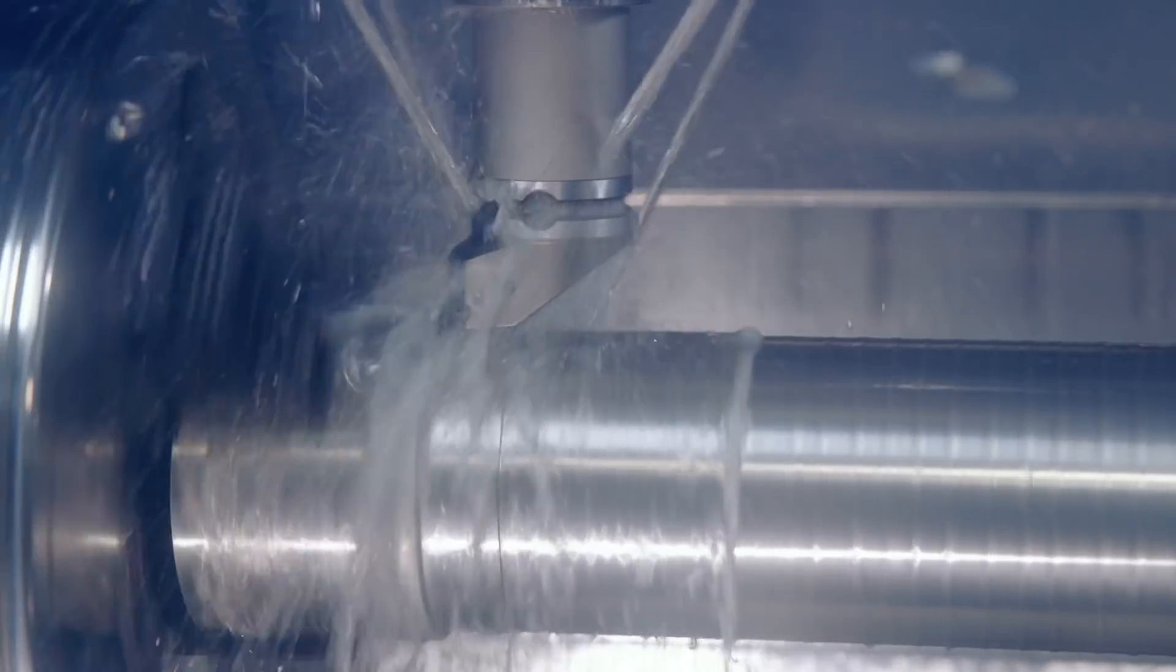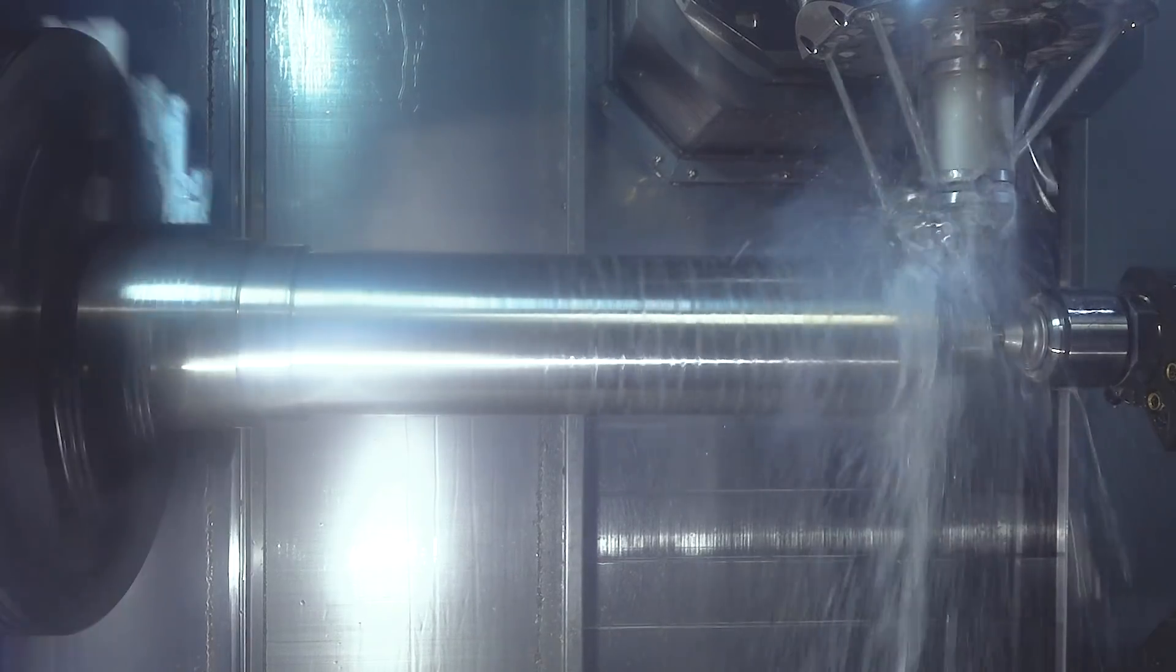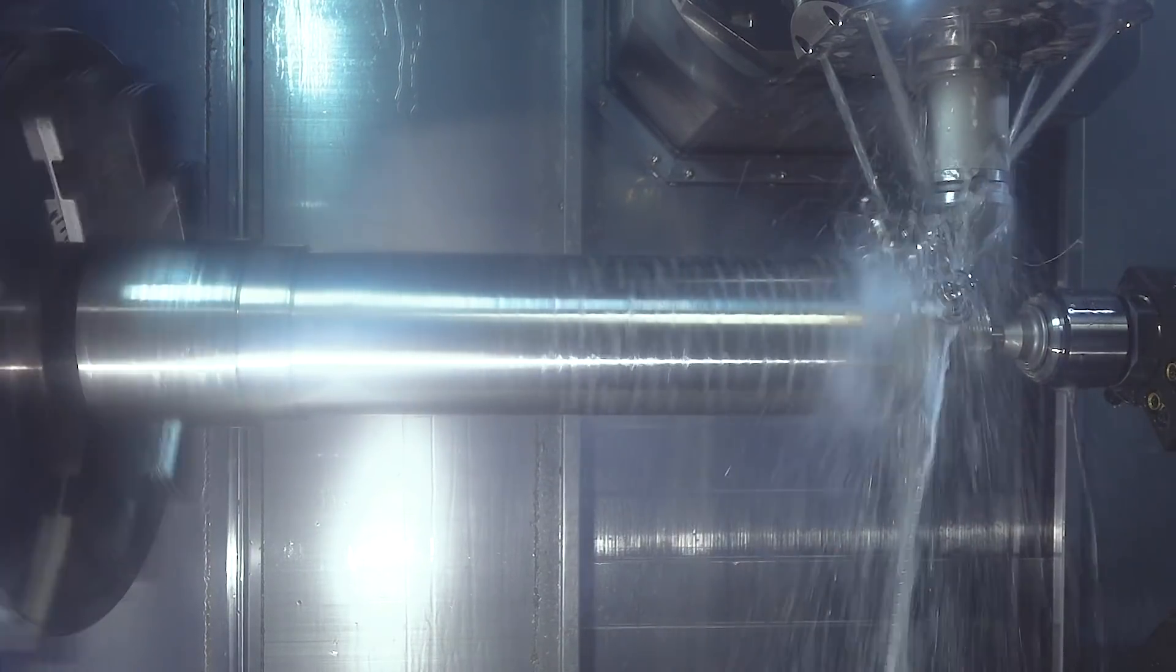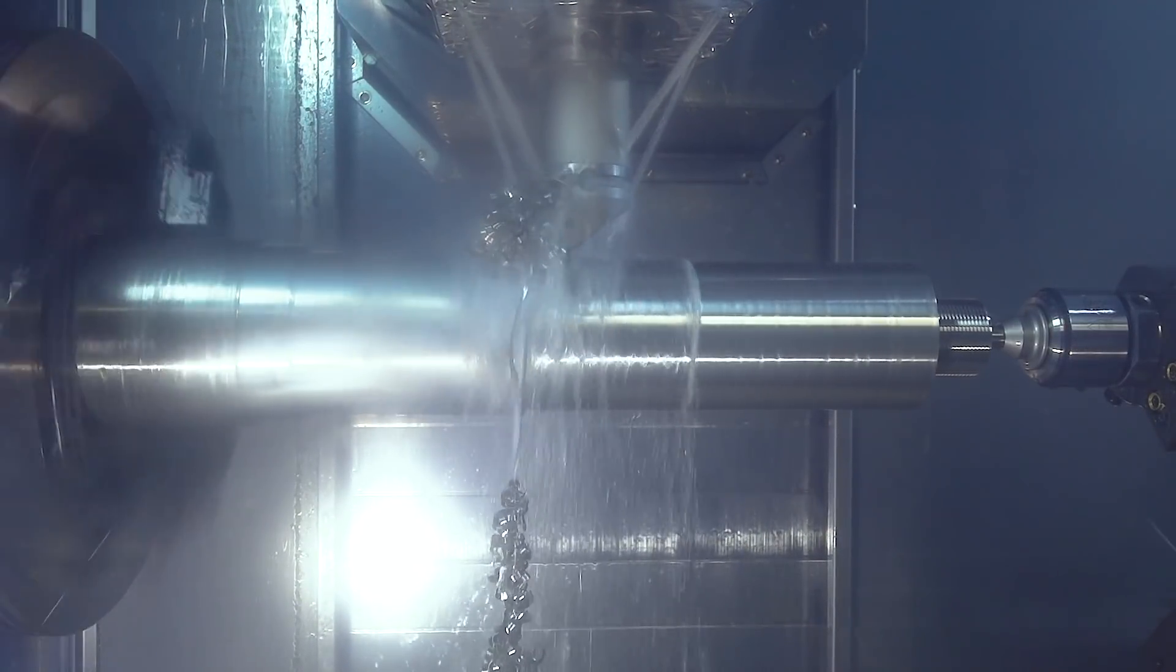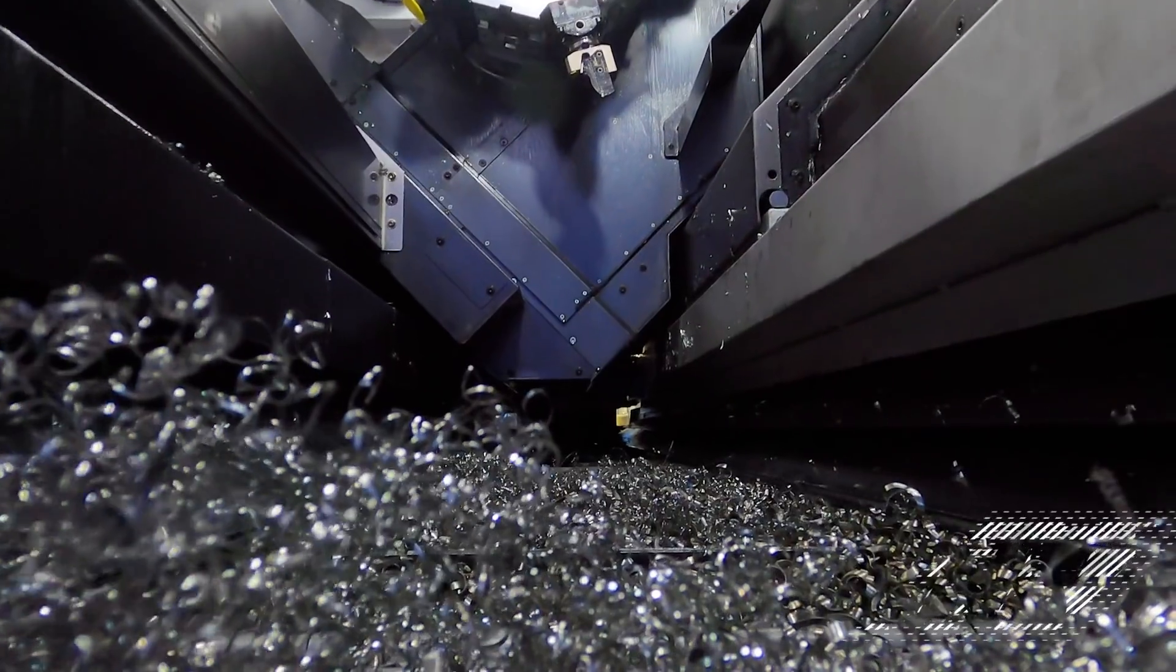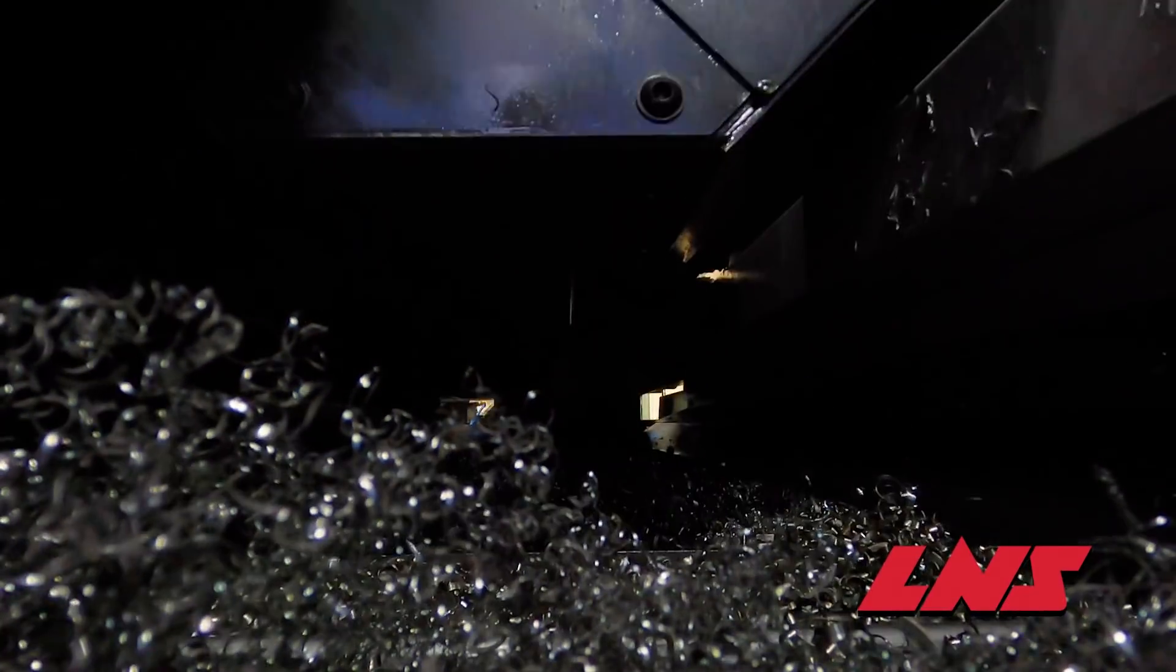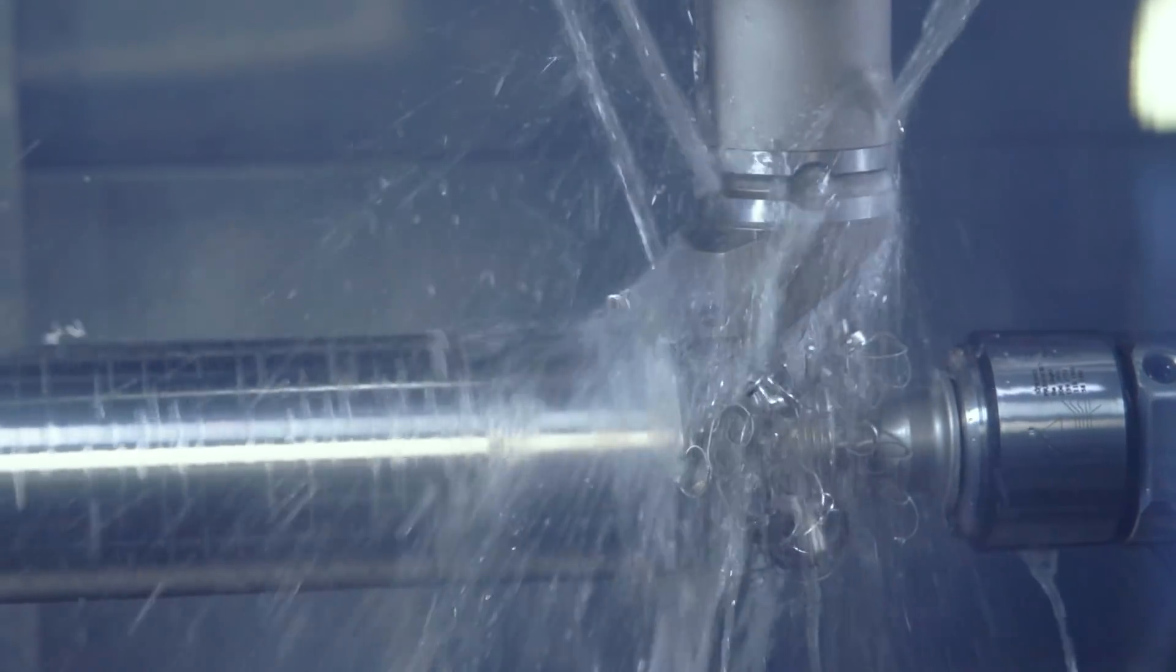This OD roughing tool is going to be leaving 40 thousandths for the finish pass. The tool is removing a lot of material and at the start of the cut we have a little bit of a long chip, but shortly after it engages the chips come out nice and small so I'm really happy with the parameters we're using.